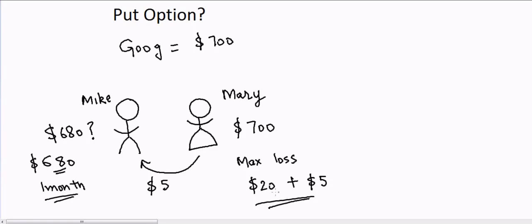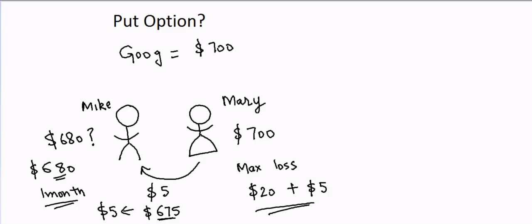Because the stock can go to $680 plus the five dollars she paid for the premium, Mary now has more peace of mind. In the case of Mike, he's happy because he made five dollars. And if the stock goes down to $650 or $680, and he buys for $680, he can subtract the five dollars, meaning he effectively ends up buying Google for $675.